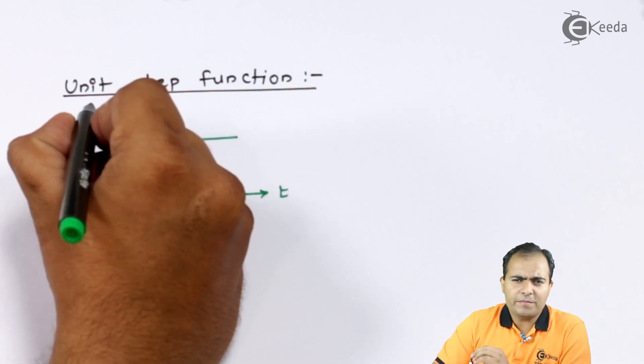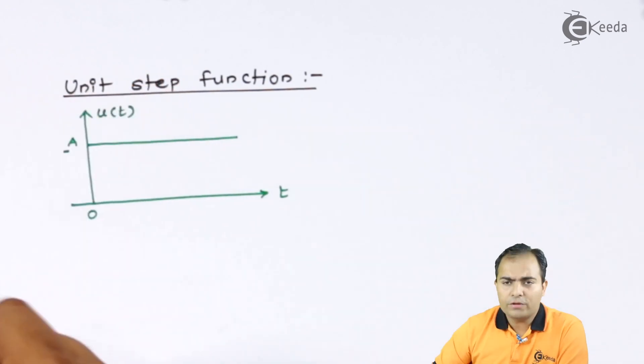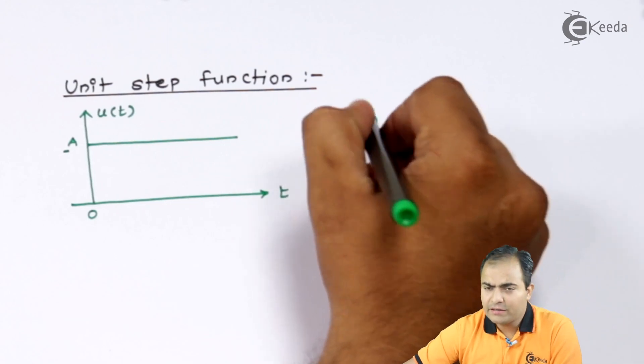Basically, the step function is represented by u of t. So, I will write here u of t and its equation is...